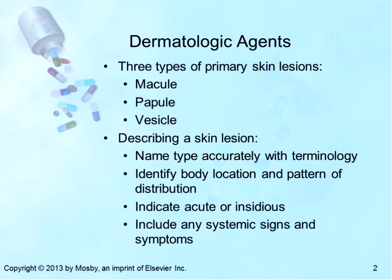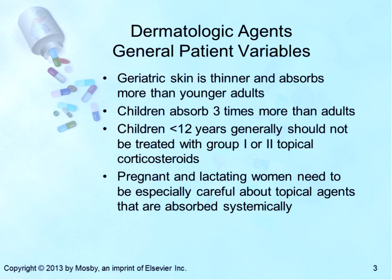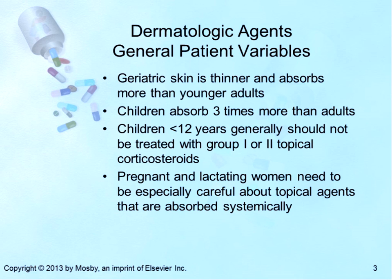Timing and course should include whether the onset was acute or insidious, and the presence of any systemic signs and symptoms. Agents known to be harmful to the fetus include tretinoin, lindane, and podofilox. Geriatric skin is thinner and absorbs three times more than younger adults. Children absorb three times more than adults, and children under 12 generally should not be treated with group one or two topical corticosteroids. Pregnant and lactating women need to be especially careful about topical agents that are absorbed systemically.